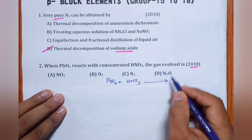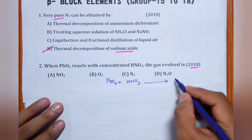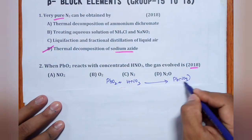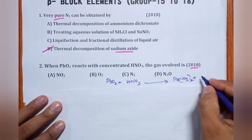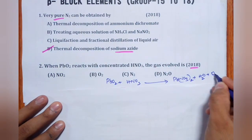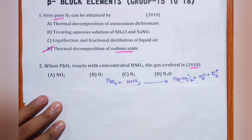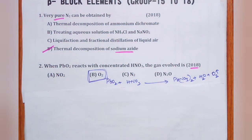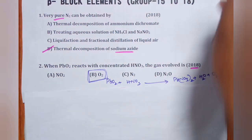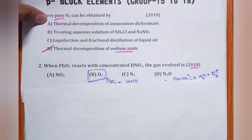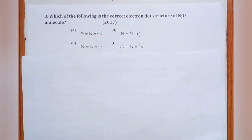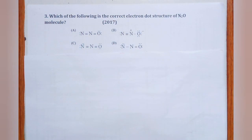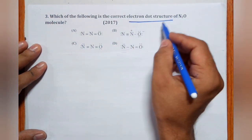PbO2 reacts with concentrated HNO3 to give Pb(NO3)2 + H2O + O2 gas. Therefore, oxygen gas is evolved — answer is (b).